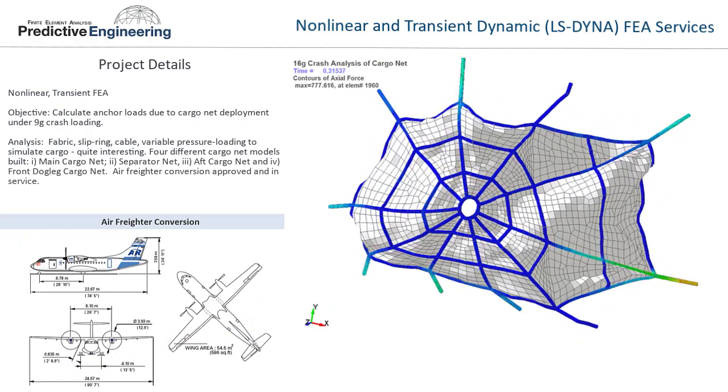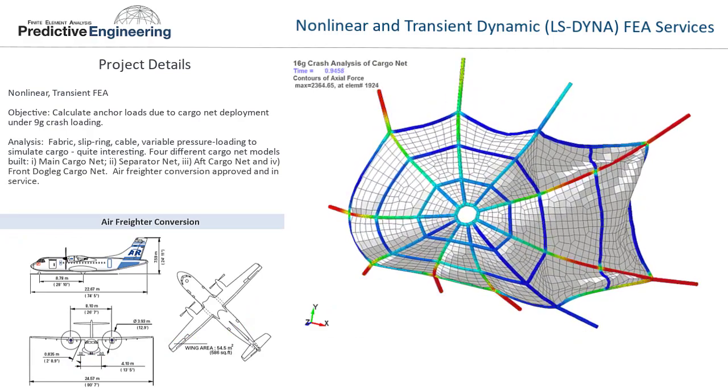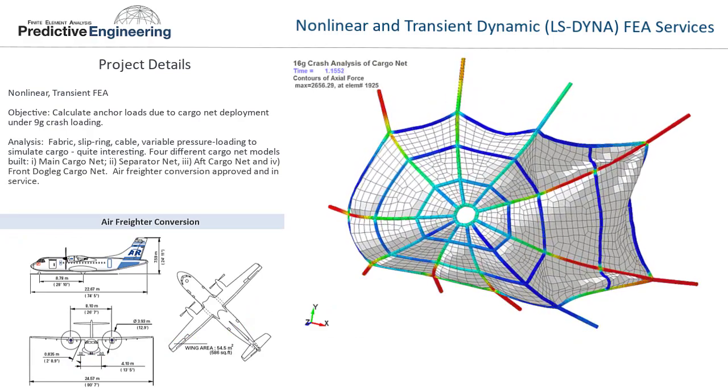This next one was a freighter conversion — aviation — doing a cargo net to follow anchor loads.